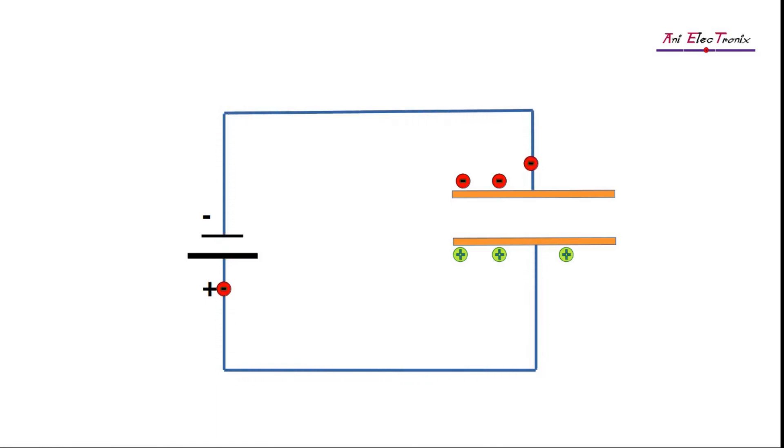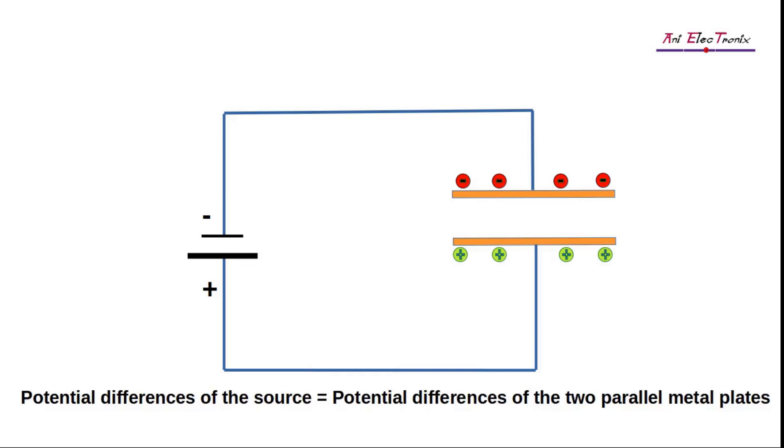Eventually, the bottom plate will have a shortage of electrons, while the upper plate will have excess electrons. When we examine closely, we will see potential differences between the two plates. As the charge accumulates, it will reach equilibrium when the potential difference developed between two parallel plates is equal to the voltage applied to the source. We can see an electric field develop across the dielectric medium due to the accumulation of electric charges.